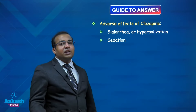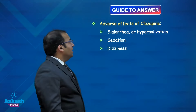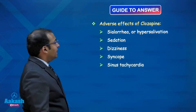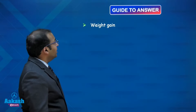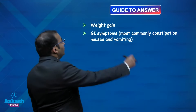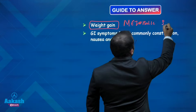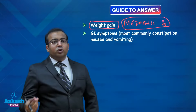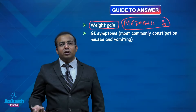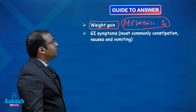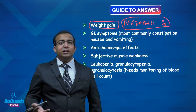Clozapine causes higher sedation compared to other antipsychotics, so patients may complain of significantly increased sleep time. Patients may also have dizziness, postural hypotension, syncopal attacks, sinus tachycardia, fatigue, weight gain, and GI symptoms like constipation, nausea, and vomiting. Importantly, patients on clozapine need monitoring of sugar profiles, lipid profiles, body weight, and waist-to-hip ratio, as clozapine alters metabolism and can lead to significant long-term adverse effects including metabolic syndrome.